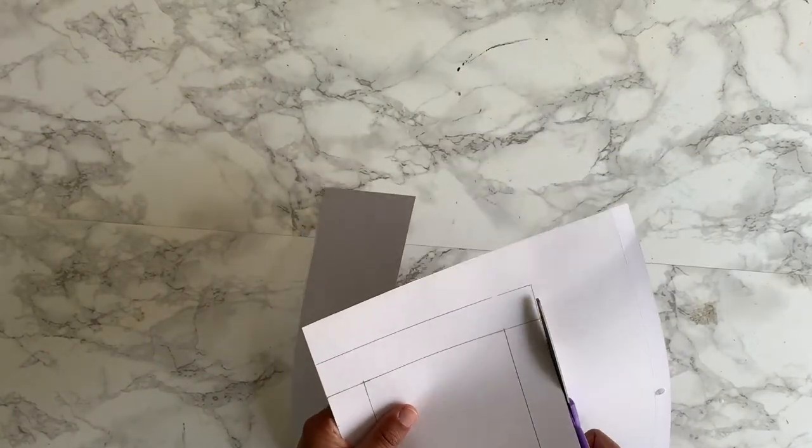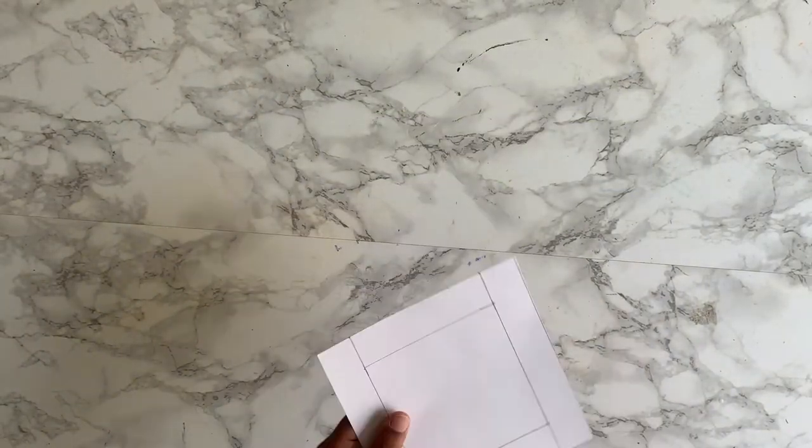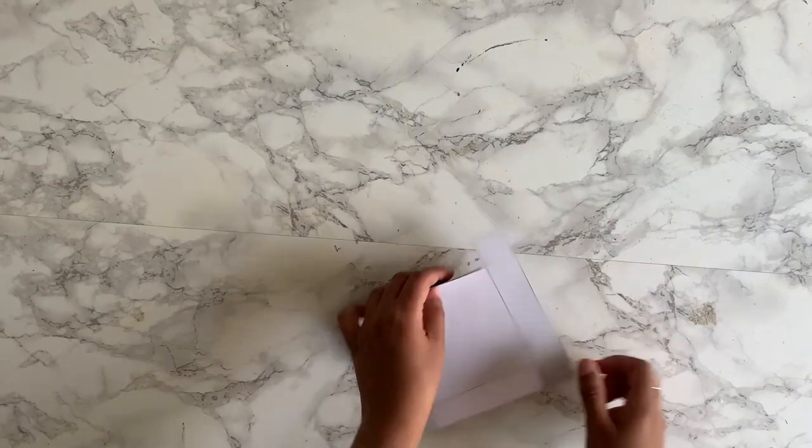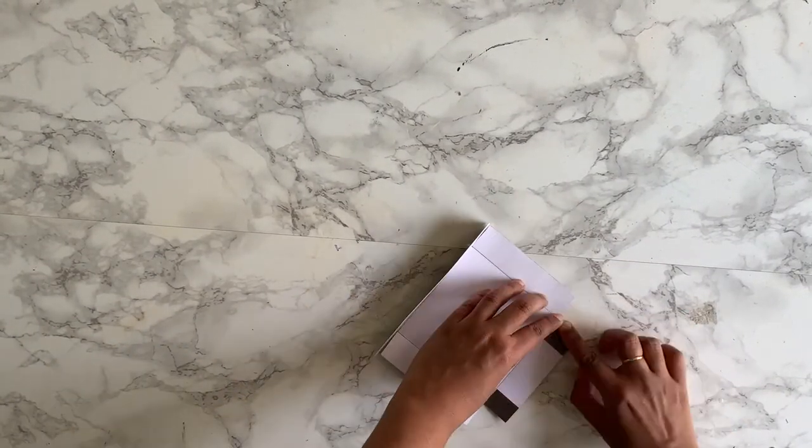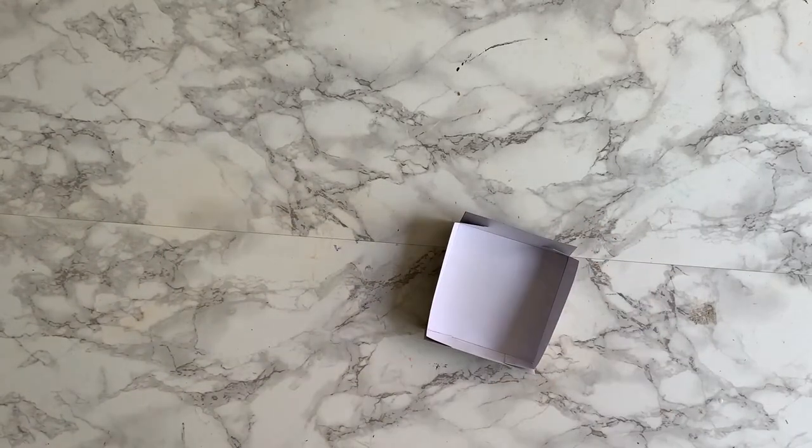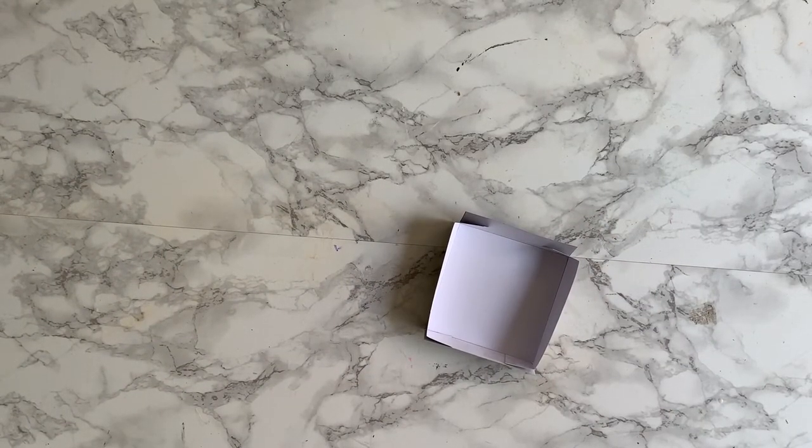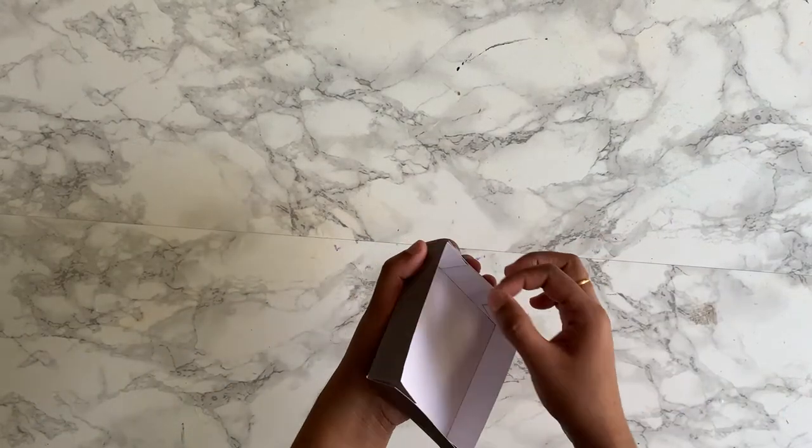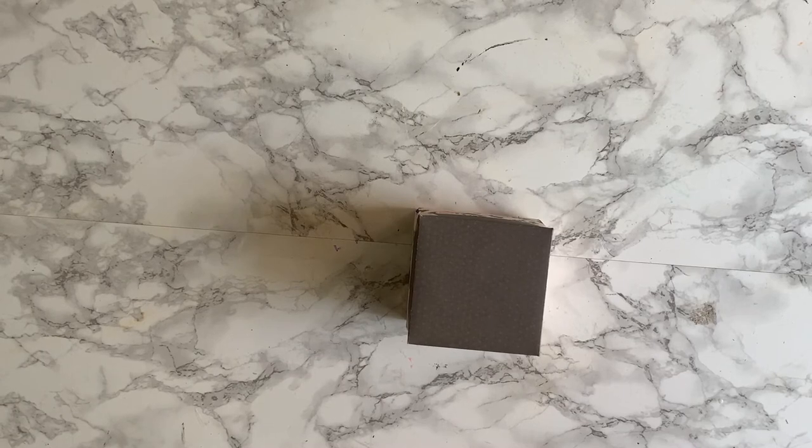Now for the lid, take another scrapbook paper or cardstock. Draw a 4.1 inch square, an outline of 1 inch on all the sides for the lid. Cut along the drawn lines, make slits on the either side as shown. Fold the sides and secure it with tape as shown to complete the lid. Test it to see if it fits properly.